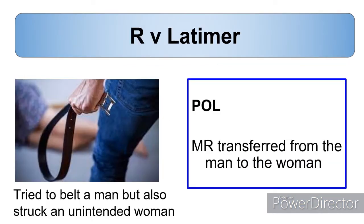Let's have a look at the case that illustrates this concept: R v Latimer. Here a man tried to belt another person but accidentally struck a woman who he didn't intend to strike. This illustrates the idea that the mens rea can be transferred to an unintended victim — that's the whole concept of transferred malice.